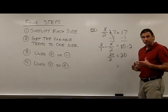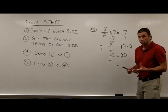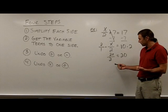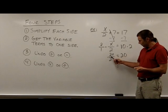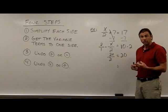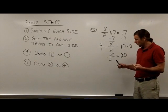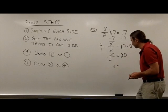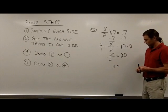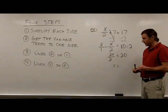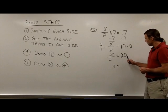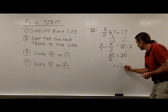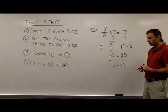We now have 2x divided by 2 on the left side, and 2 divided by 2 gives 1, leaving just x. So the solution is x equals 20.